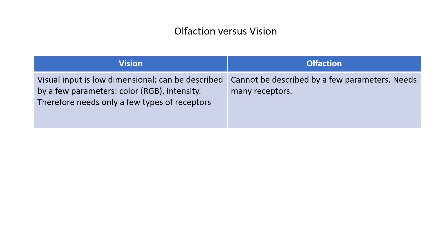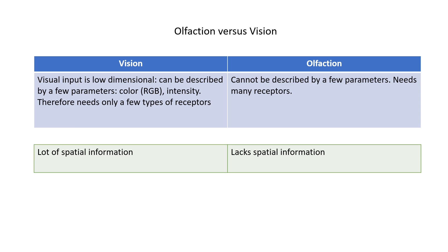The way smell is simpler than vision is in terms of spatial complexity. When we see things, we detect colors from many different locations in space simultaneously — each point on our retina has a narrow receptive field, and the brain figures out how colors are distributed in space. But in olfaction, at any instant we only get one smell; we lack detailed information about smells coming from different locations. We may be able to infer the source by moving around or comparing smell gradients over time, but that requires extra effort and is only possible to a limited extent.